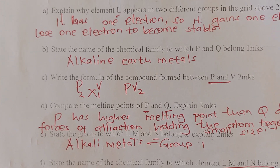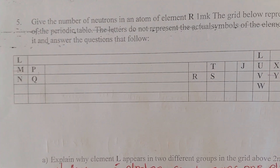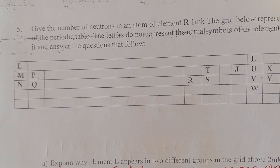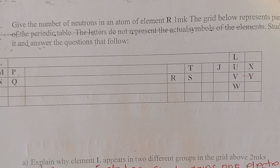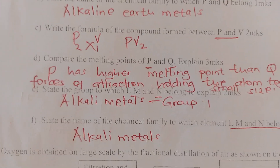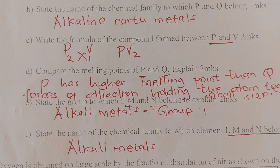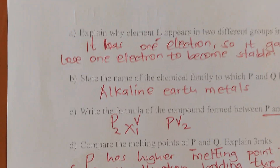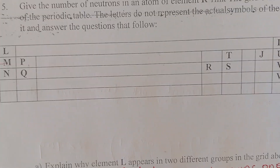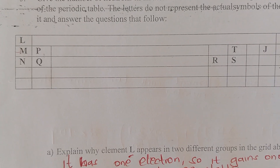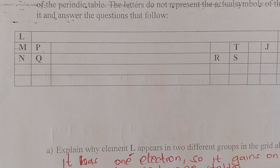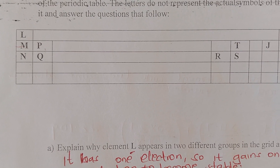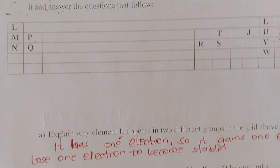Write the formula of the compound between P and V. P has valency 2 and V has valency 1, so the formula will be PV2. Comparing the melting points of P and Q: P is smaller in size, so it has a higher melting point than Q, which is larger in size and therefore has weaker forces of attraction.